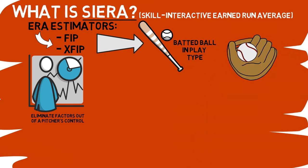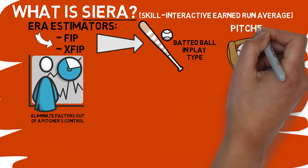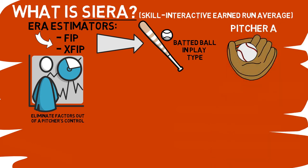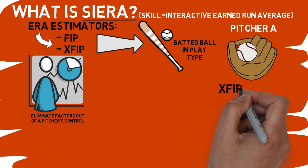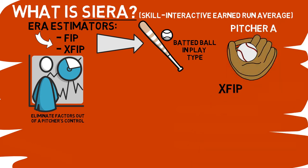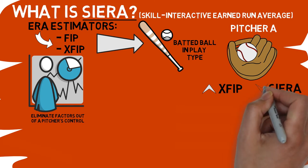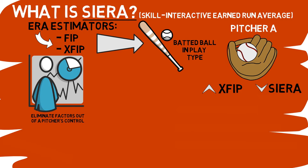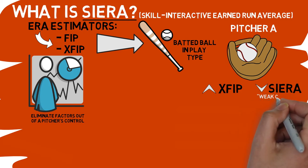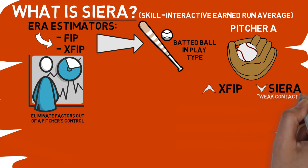Let me explain that a little bit more. Imagine we have a pitcher who has a relatively high xFIP because he doesn't strike out a ton of batters, but if he does generate a lot of soft contact — i.e. popups and grounders — then his Sierra will be lower than his xFIP, because this stat takes into account those batted ball profiles.